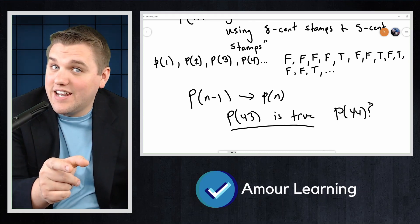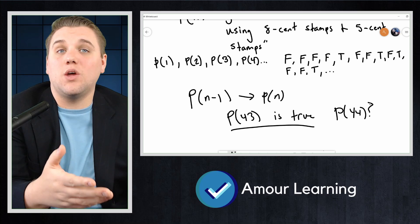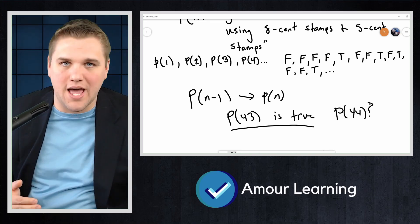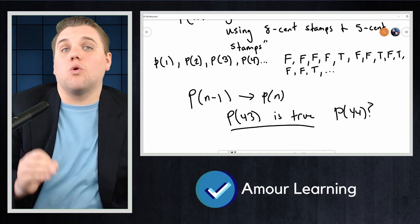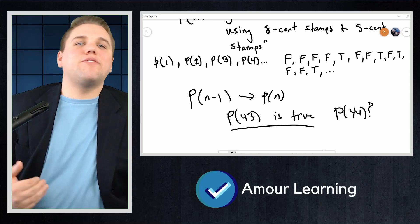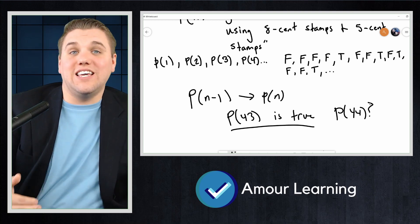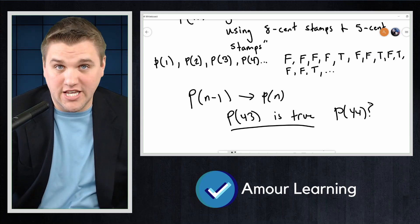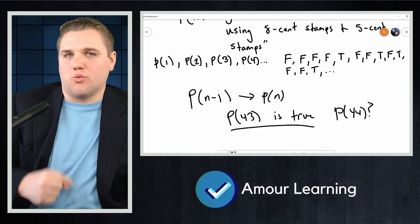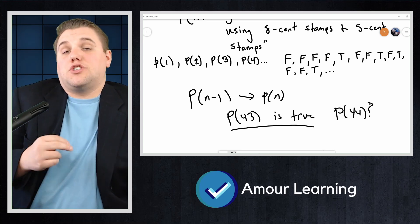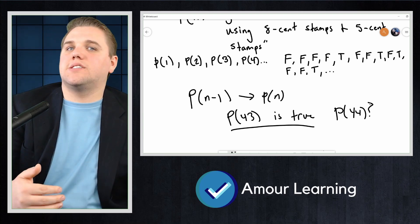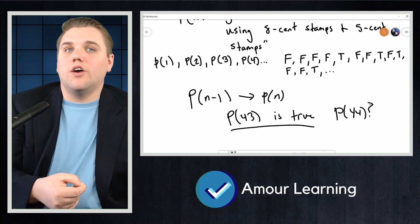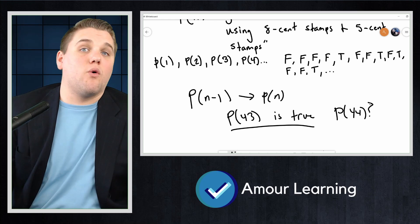Yes, you can. Even if we don't know how exactly we made 43 cents out of the 5-cent and 8-cent stamps, we do know that there was some way to do it. What if that way used at least three 5-cent stamps, making 15 cents? We could replace those three 5-cent stamps with two 8-cent stamps, making 16 cents. The total postage has gone up by 1,